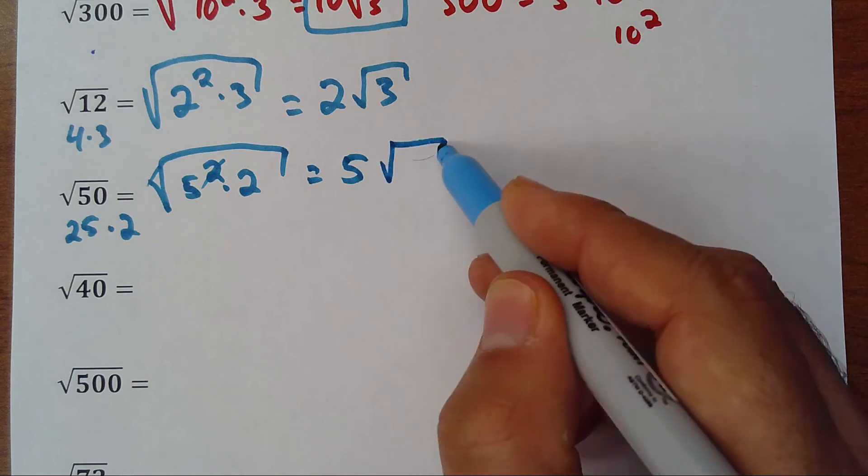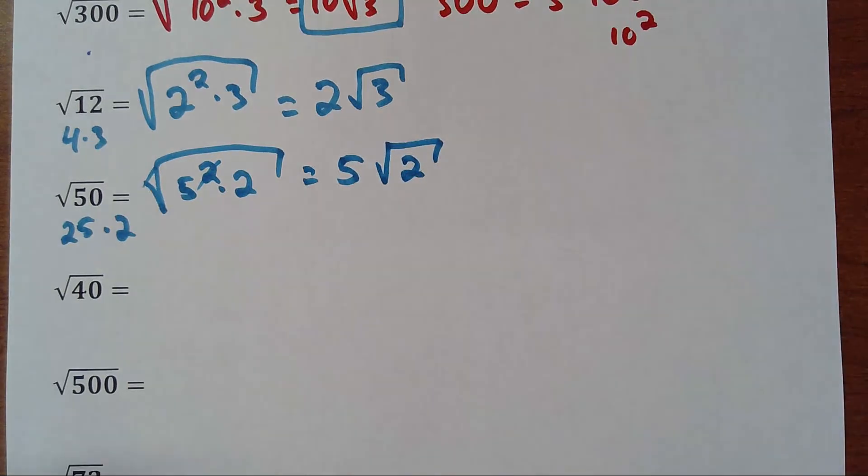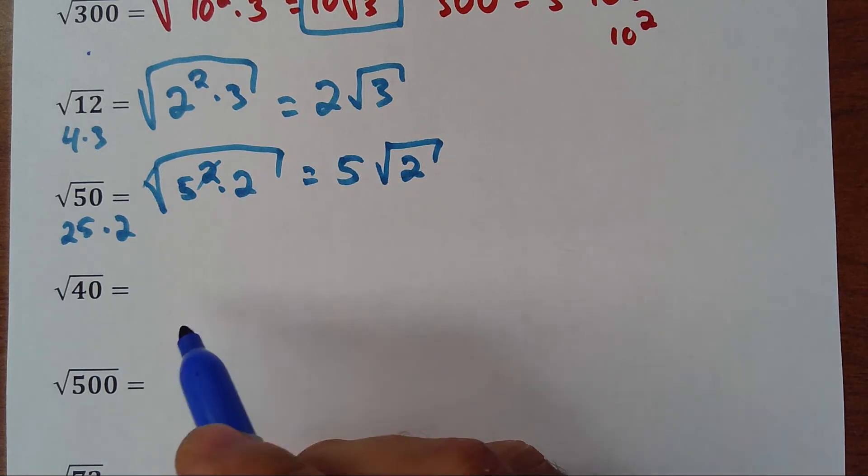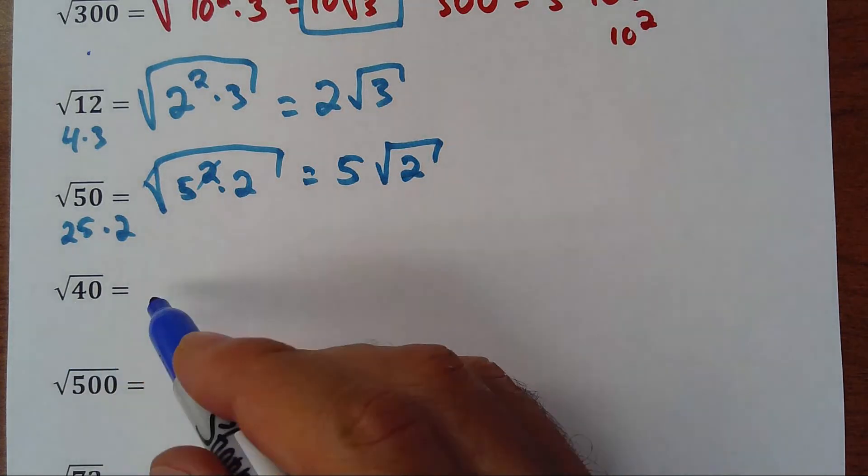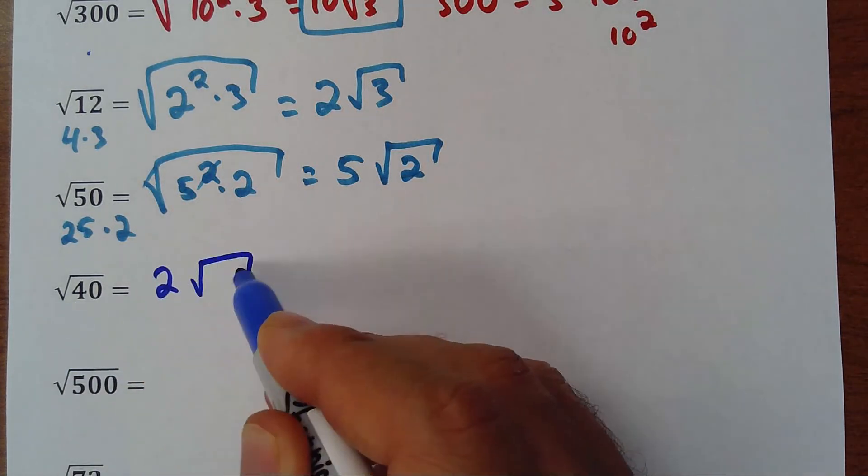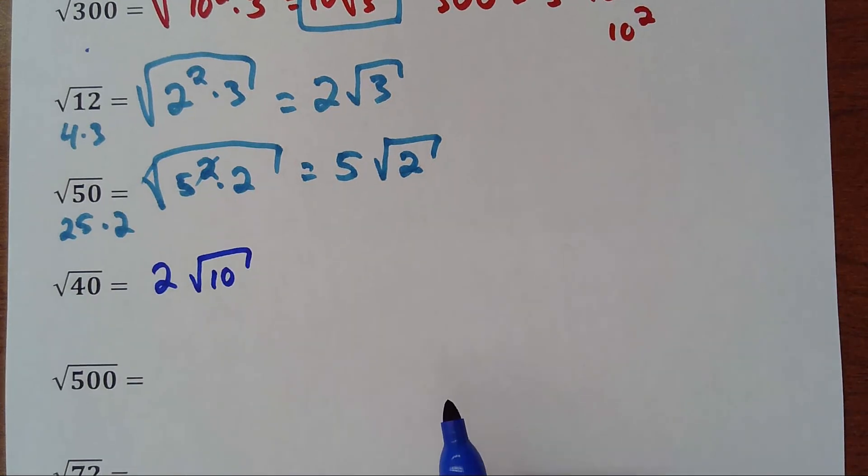Then we have 40. We can do 4 times 10, and 4 is 2 squared, so it would be 2 square root of 10. That's the answer.